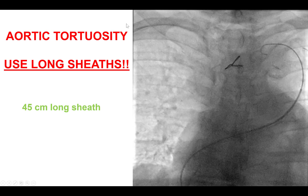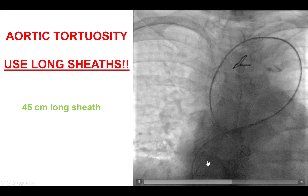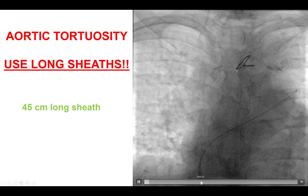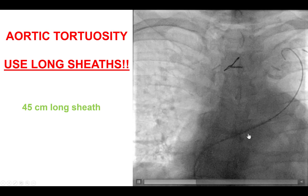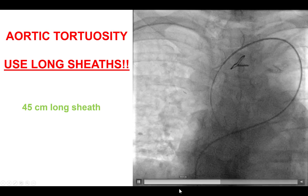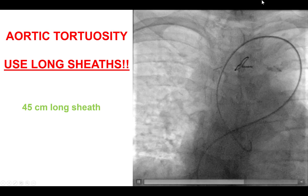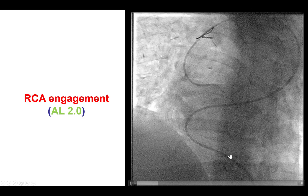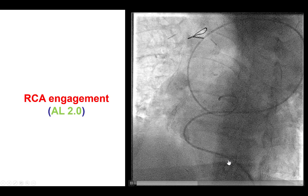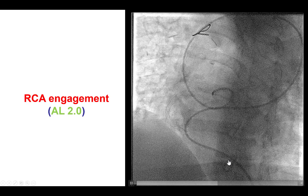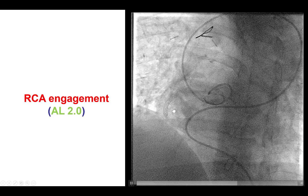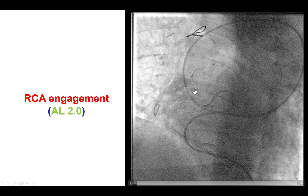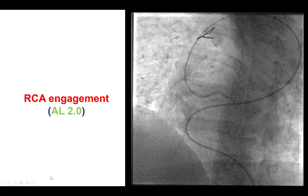Another important component is aortic tortuosity. In general, long sheaths are advantageous, but even more so in cases with severe aortic tortuosity. By using long 45 cm or 60 cm sheaths, one can obtain extra support to advance the guide catheters and engage the coronary vessel.